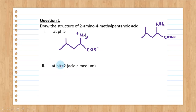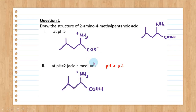If the question gives pH 2, that pH is less than the pI value (2 < 5), which refers to an acidic medium. In acidic medium, there are extra H⁺ ions, so the COO⁻ in the zwitterion gains H⁺ to become COOH again, while the NH3⁺ remains unchanged. As a simple rule: in acidic medium, the structure produced has an overall positive charge.